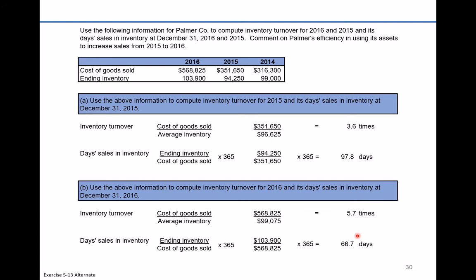To comment on efficiency: inventory was sitting on the shelves about 98 days in 2015, and now it's about 67 days in 2016. If the industry average is 100 days, this company is doing pretty well and trending in the right direction. If the industry average is 30 days, they've made an improvement but inventory is still not selling very well. Those are some quick comments on Palmer's efficiency in using inventory for its sales.